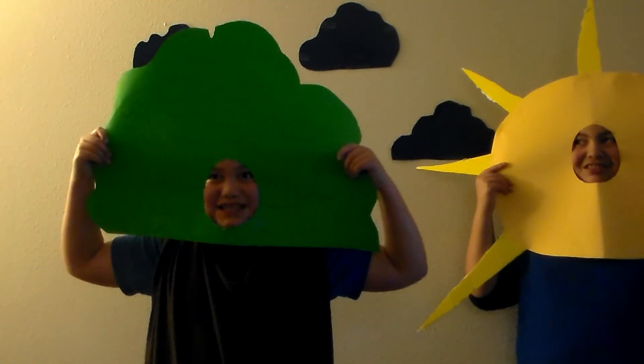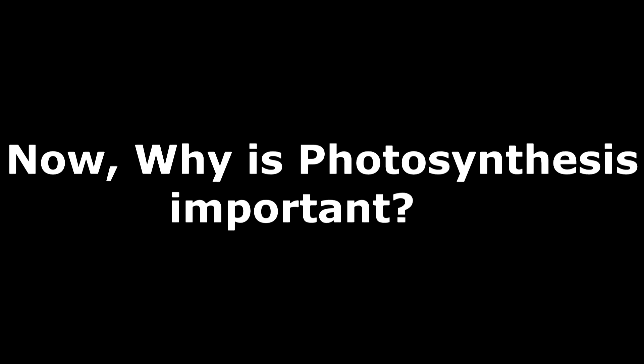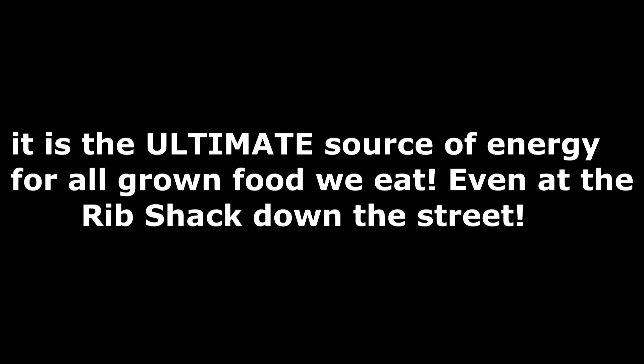We forgot to tell them about the chloroplast! Yes, the chloroplast of the plant leaves mesophyll cells. Photosynthesis is affected by temperature, light, intensity of light, length, and carbon dioxide level. Now, why is photosynthesis important? It is the ultimate source of energy for all grown foods that we eat, even at the barbecue down the street.